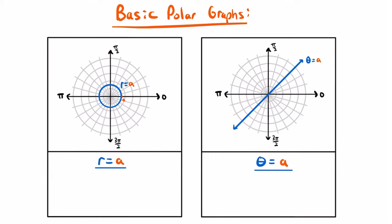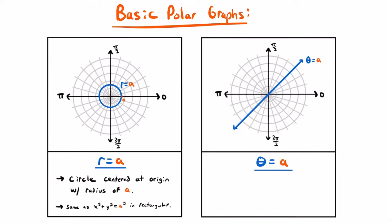Our first two basic polar graphs: the first is represented by r equals a, where a is some constant. When you see r equals some constant a, you know you're working with a circle centered at the origin with a radius of that constant a. This is the same as x squared plus y squared equals radius squared in the rectangular system. The value of a could be positive or negative and you would still have the same circle centered at the origin.